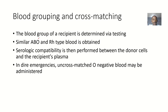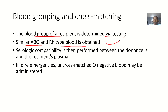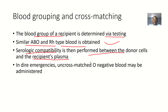The blood group of a recipient is determined via testing. Similar ABO or Rh type blood is then obtained for transfusion — you need to find blood that has a similar blood group and similar Rhesus factor for transfusion. Serological compatibility is then performed between the donor cells and the recipient's plasma, comparing what is coming from the donor with what the recipient has.